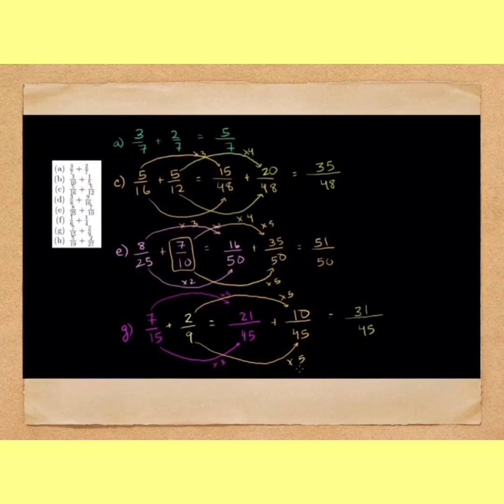you are getting 35 upon 48. In other example, 8/25 plus 7/10, least common multiple is 50. Multiply 8/25 with 2 and multiply 7/10 by 5 so that it becomes equal to 51 upon 50. In the same way, you can solve other problems also.